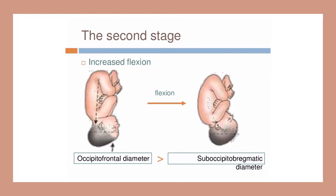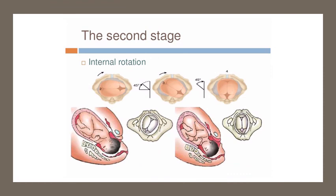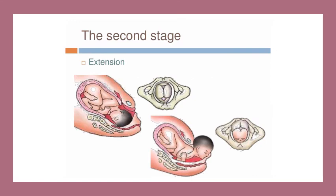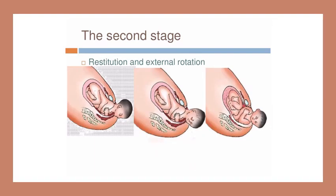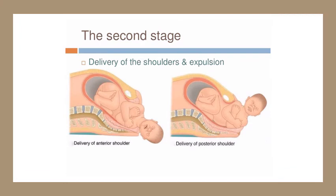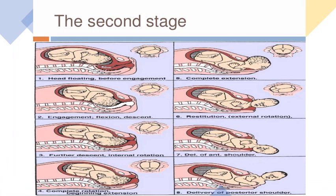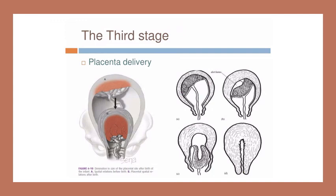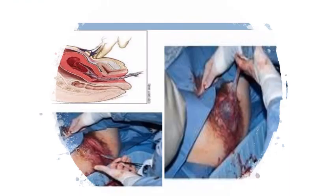When the occiput-frontal diameter presents at the pelvic inlet, once the child is flexed it presents the suboccipitobregmatic diameter of about 9.5 cm. With internal rotation, the child rotates internally. Then extension occurs — this is the crowning, where we see the fetal head emerge. Then restitution and external rotation, delivery of the anterior shoulder first, then the posterior shoulder. The third stage is delivery of the placenta and fetal membranes; you inspect the placenta to ensure the vessels are complete. The placenta is delivered with gentle controlled cord traction.